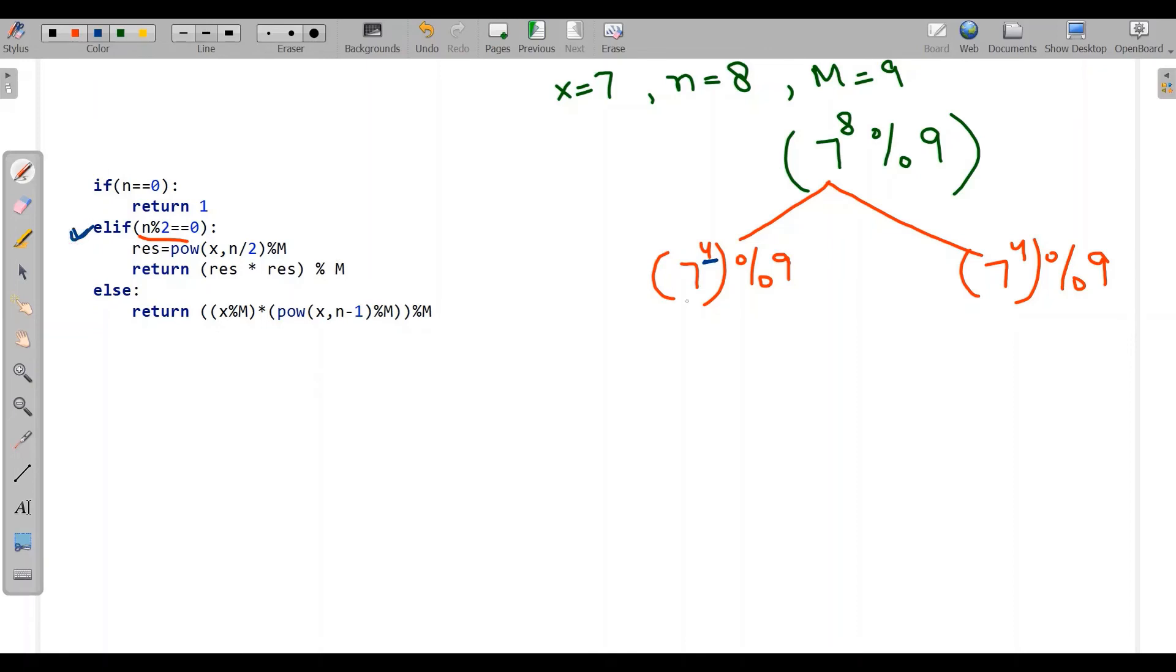Again it will go to elif and here it will distribute to 7 to the power of 2 mod 9. And here similarly for this also. Then again it will check 2 is even. So here again it will distribute into 7 to the power of 1 mod 9.